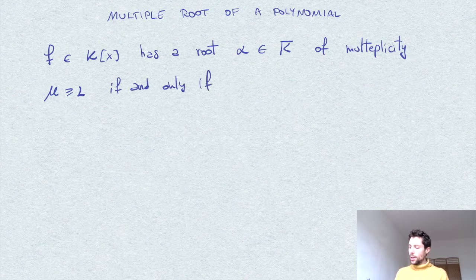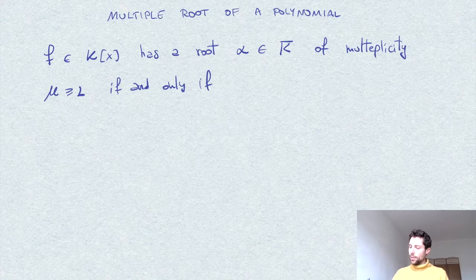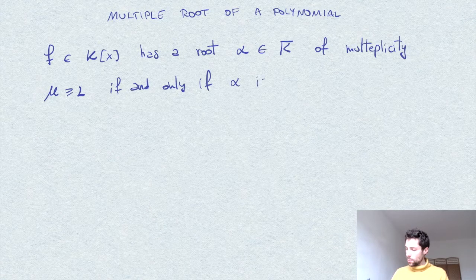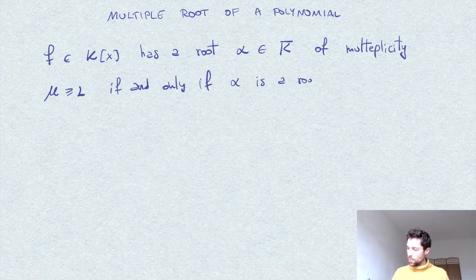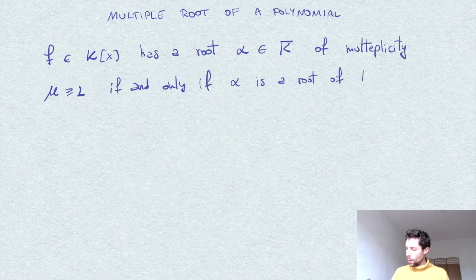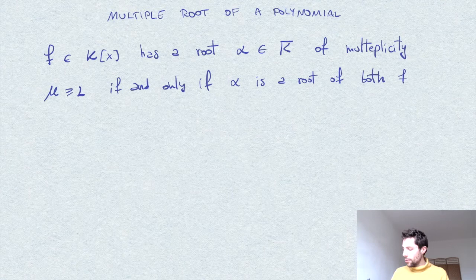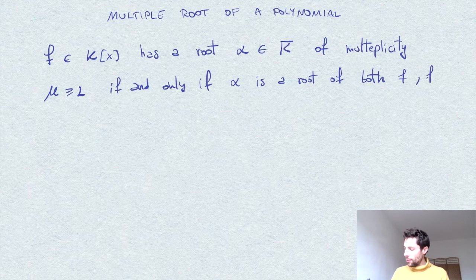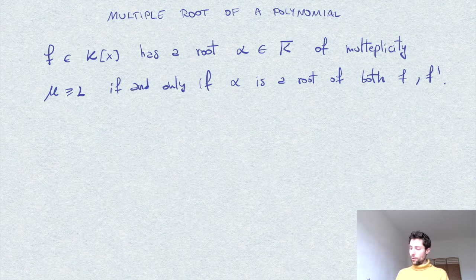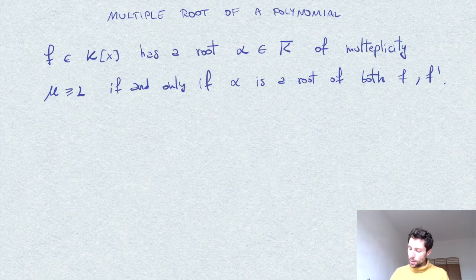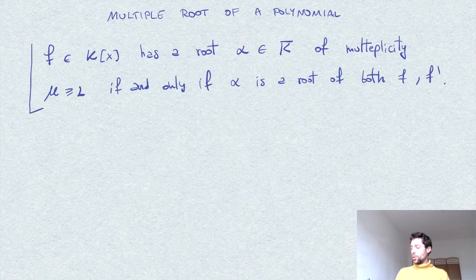alpha is both a root of f and its derivative, of both f and f prime, the derivative of f. So this is the statement we want to prove.